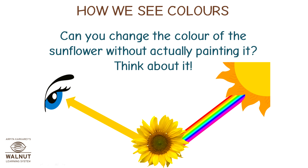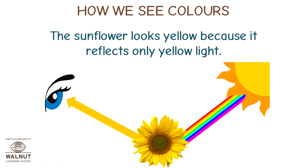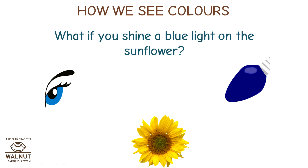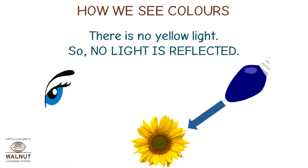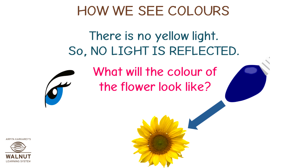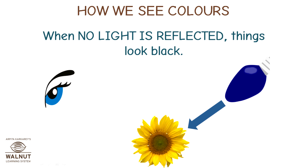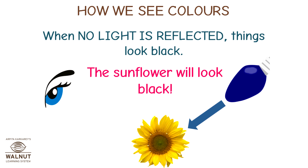Can you change the color of the sunflower without actually painting it? The sunflower looks yellow because it reflects only yellow light. What if you shine a blue light on the sunflower? The sunflower reflects only yellow light and absorbs everything else. There is no yellow light, so no light is reflected. When no light is reflected, things look black. The sunflower will look black.